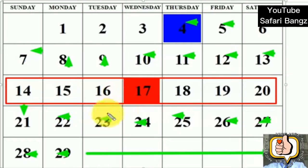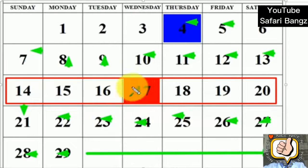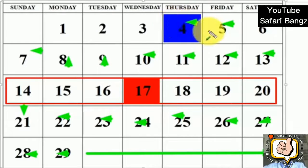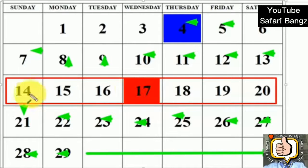The danger period — the days you avoid sexual intimacy — are the days around the 14th day. To repeat: the first thing is to start counting from the day you started bleeding; that would be day one. The next thing is to avoid day 14 and the days around day 14.